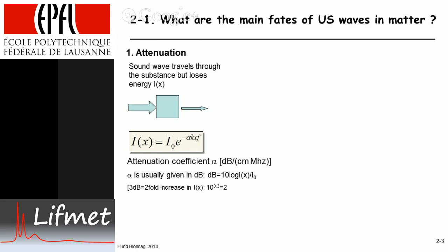For physicists, decibel is a horrible unit; for engineers, less so. Much of engineering is done, and I always have difficulty figuring out what decibel means, so I wrote it here. Three decibels corresponds to a twofold attenuation—that's easy to remember. Six decibels is fourfold, etc.